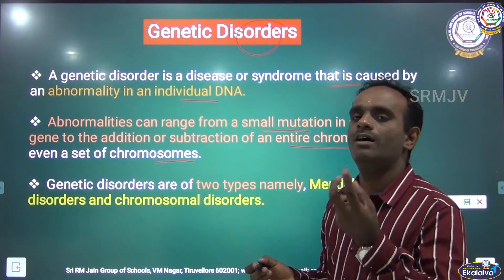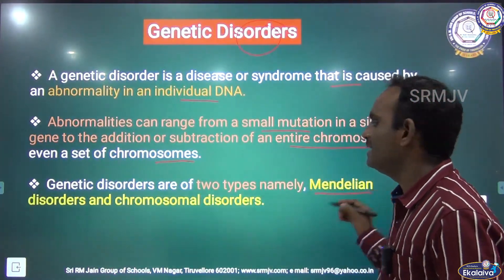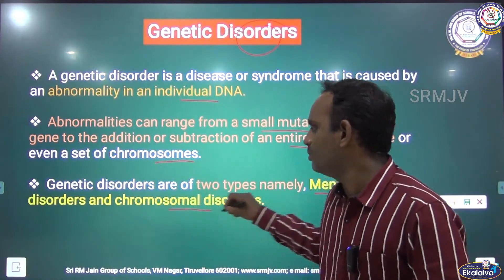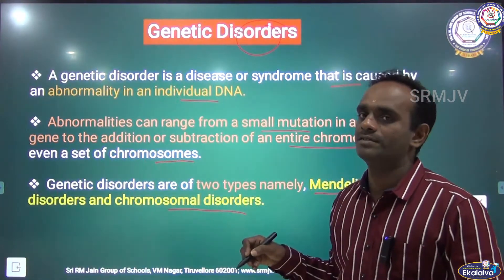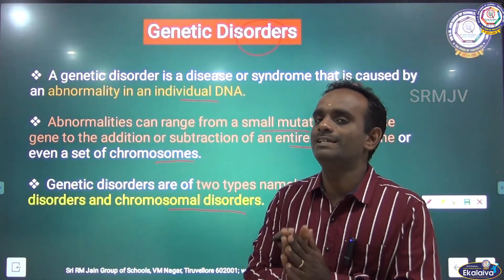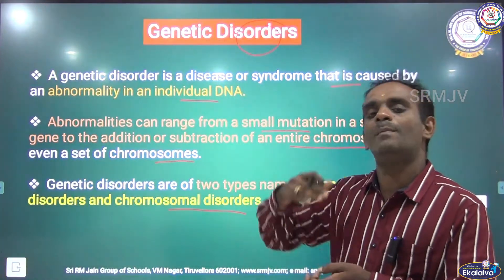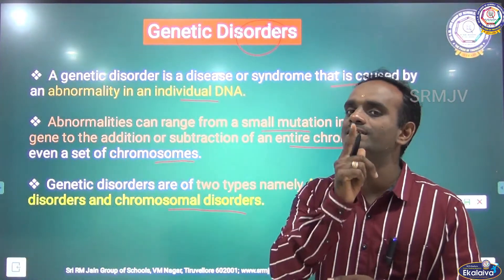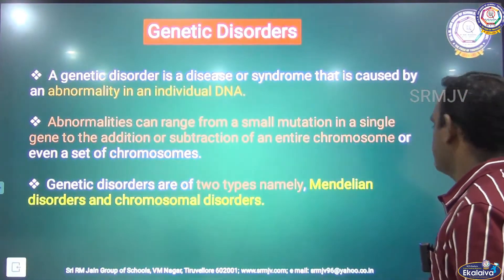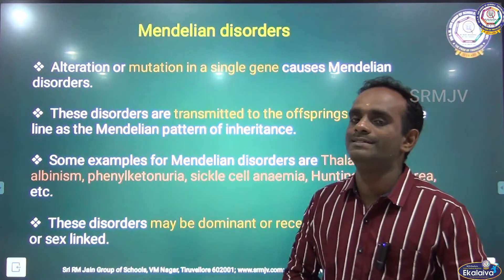The genetic disorders are of two types: one is Mendelian disorders and another one is chromosomal disorders. Mendelian disorder is nothing but the disorder where damage or abnormality takes place in a single gene. First, we will see the Mendelian disorders.